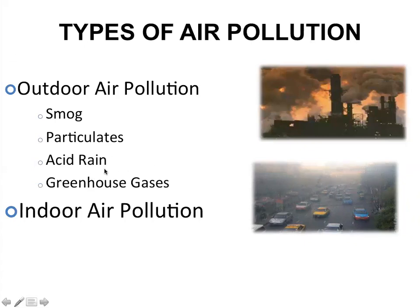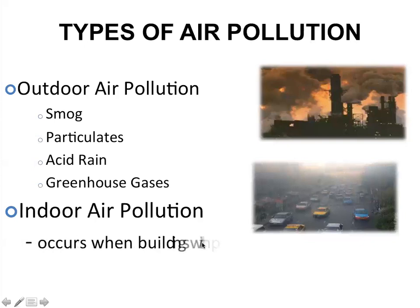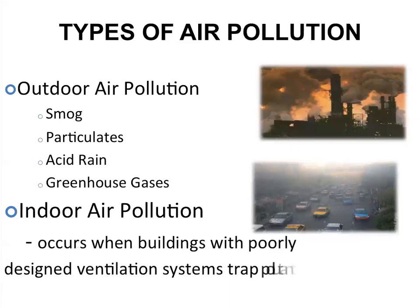The third source of outdoor air pollution is acid rain — rain or any other form of precipitation that is usually acidic, meaning it has elevated levels of hydrogen ions at low pH. It can have harmful effects on plants, aquatic animals, and infrastructure. Acid rain is caused by emissions of sulfur dioxide and nitrogen oxide, which react with water molecules in the atmosphere to produce acids. The second type of air pollution is indoor air pollution, which occurs mostly when buildings are poorly designed with poor ventilation systems in which pollutants are trapped inside.